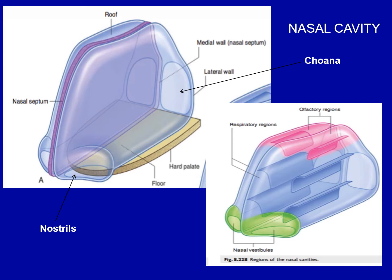The nasal cavity extends from the nostrils in front to the posterior nasal aperture or choana behind. The nasal vestibule is the area of the nasal cavity lying just inside the nostril. The nasal cavity is divided into right and left halves by a nasal septum. Each half of the nasal cavity has the following walls: a floor, a roof, a lateral wall, and a medial or septal wall.